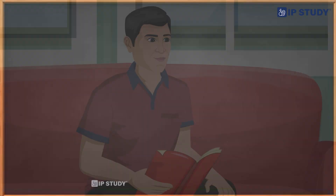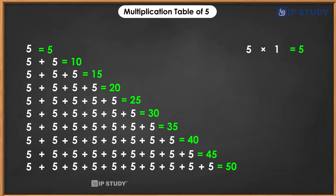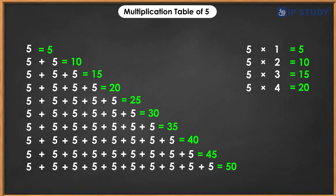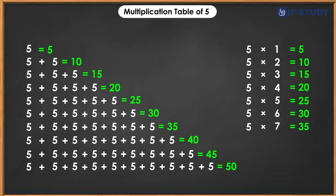Now let's start with five. One times five is five, two times five is ten, three times five is fifteen, four times five is twenty, five times five is twenty-five, six times five is thirty, seven times five is thirty-five, eight times five is forty, nine times five is forty-five, ten times five is fifty.